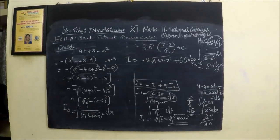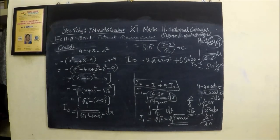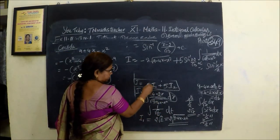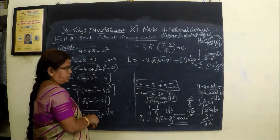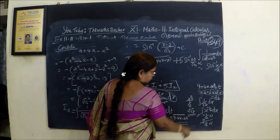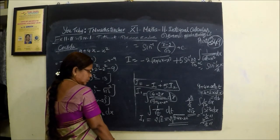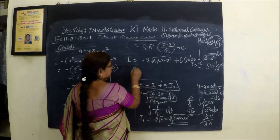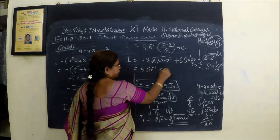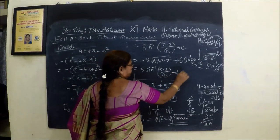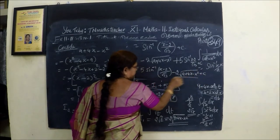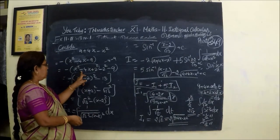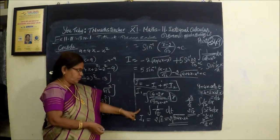Let me verify which question we are doing. The answer is: minus 2 root of 9 minus 4x minus x squared, plus 5 sin inverse of x minus 2 by root of 13, plus C. Here it is plus, not minus. This is correct. So the final answer with the plus sign gives 5 into sine inverse of x minus 2 by root of 13, then minus 2 times root of 9 plus 4x minus x squared. Thank you.